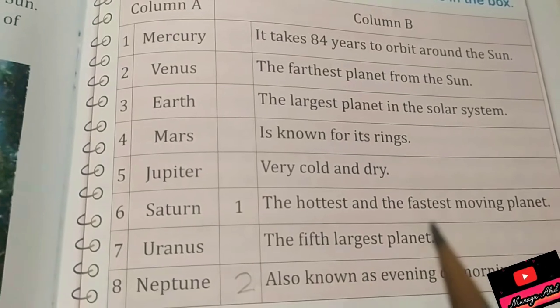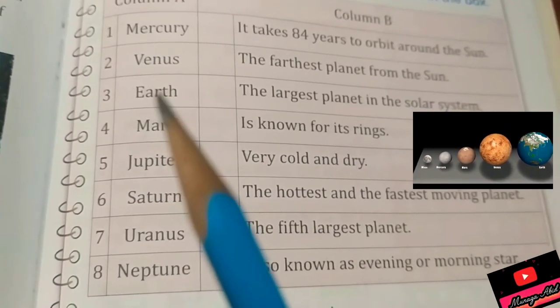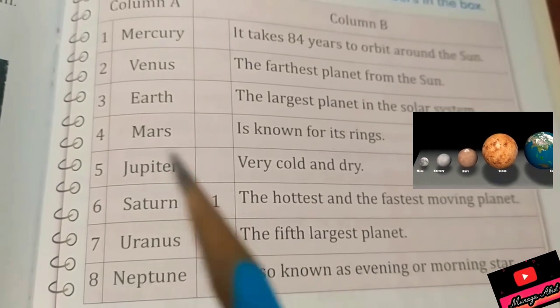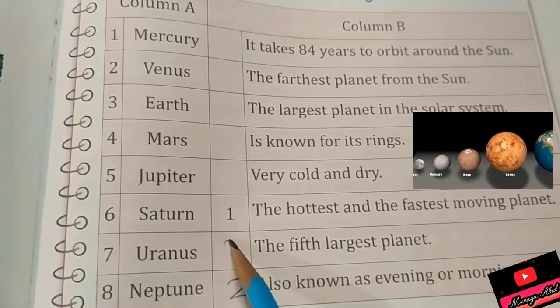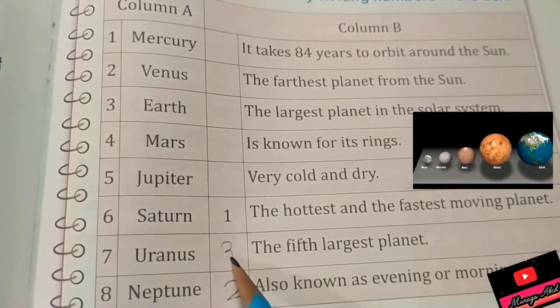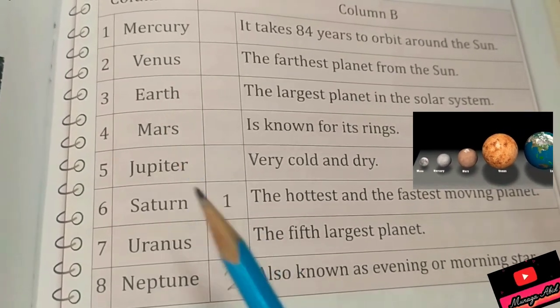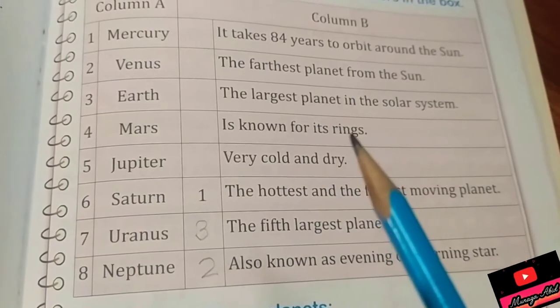The fifth largest planet is Earth. I'll show you the video clip as well that Earth is the fifth largest planet of the solar system. So here will come three. Three is the number of our planet Earth or home planet Earth.